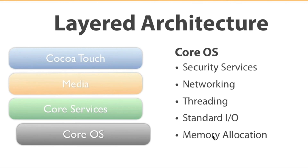So this is all about the layered architecture. What we learned today: iOS has four layer architecture — Cocoa Touch, Media, Core Services, and Core OS. If you want more details, you can rewatch the video. If you have any doubts, comment below and I will surely reply. If you liked the video, do like it and subscribe to the channel. Don't forget that. Thank you for watching. Goodbye.